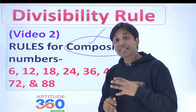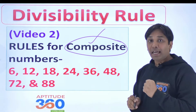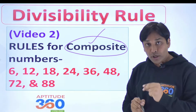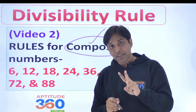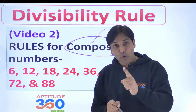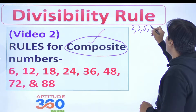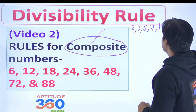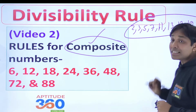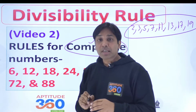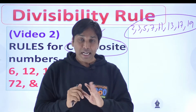Probably everybody must be understanding what is the meaning of a composite number. In the case of prime numbers, you have got exactly two factors — the number itself and 1. So maybe 2, then 3, then 5, and 7, and 11, 13, 17, 19. All these numbers are considered to be prime numbers; they cannot be factorized and hence they have got exactly two factors.